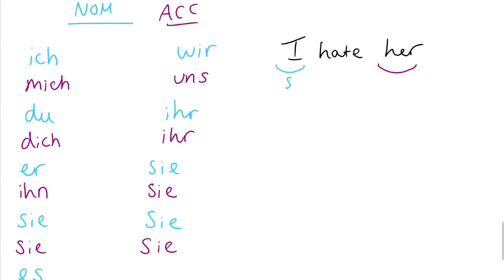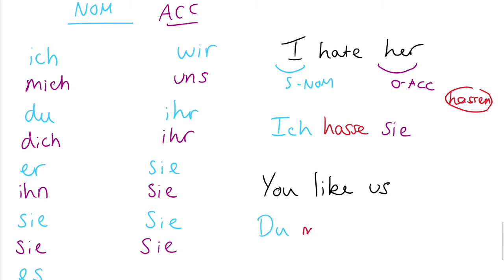I hate her. Ich hasse sie. Remember to make it change, nominative and accusative. Ich hasse sie. If you're not sure always go back to your tables. Or for example, you like us. Du magst uns. Uns. The verb magst comes from mögen which is irregular. Du magst uns. Uns is the accusative thing. Because us is the object. And you can see how similar it is in German to English.